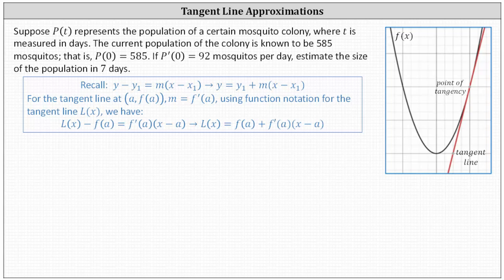So going back to our problem, because p of zero equals 585, we know the point of tangency is the point zero comma 585. And then because p prime of zero equals 92, we know the slope of the tangent line at t equals zero. Again, it's p prime of zero, which is 92.